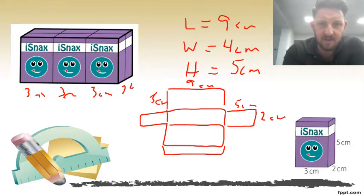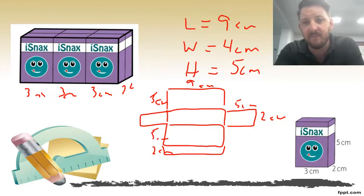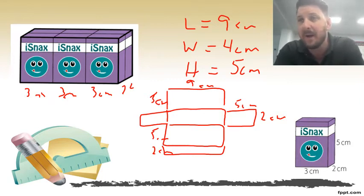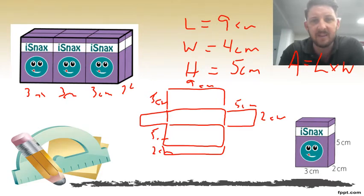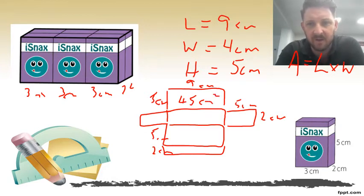I have to work out every single rectangle. We know that area equals length times width. For the first one, our length is nine and our width is five — nine times five is 45 centimeters squared. For the next rectangle, it's nine centimeters across and two centimeters down, so nine times two is 18 centimeters squared.